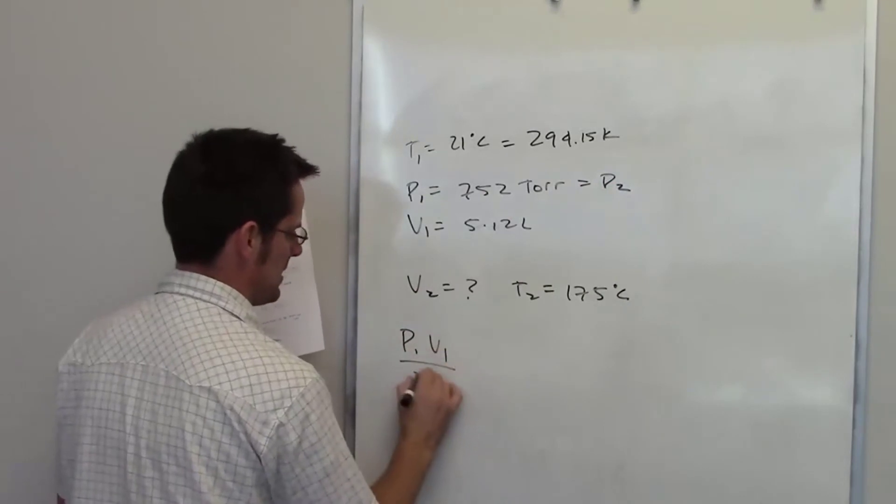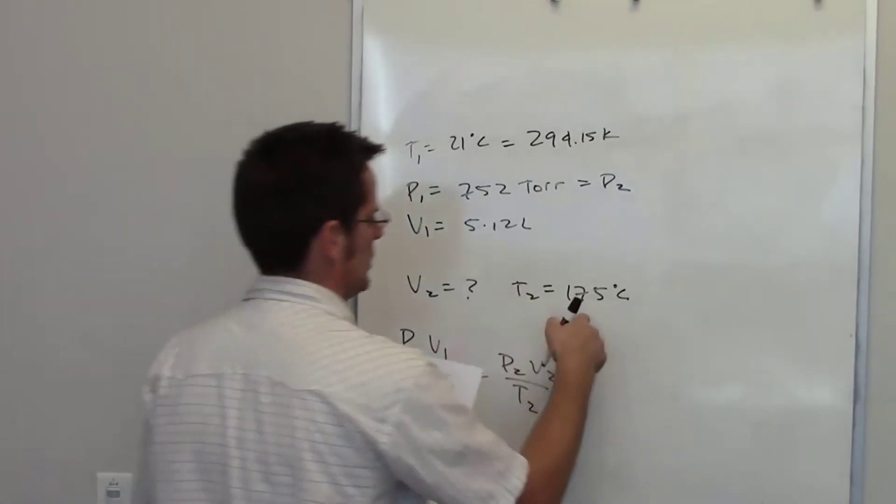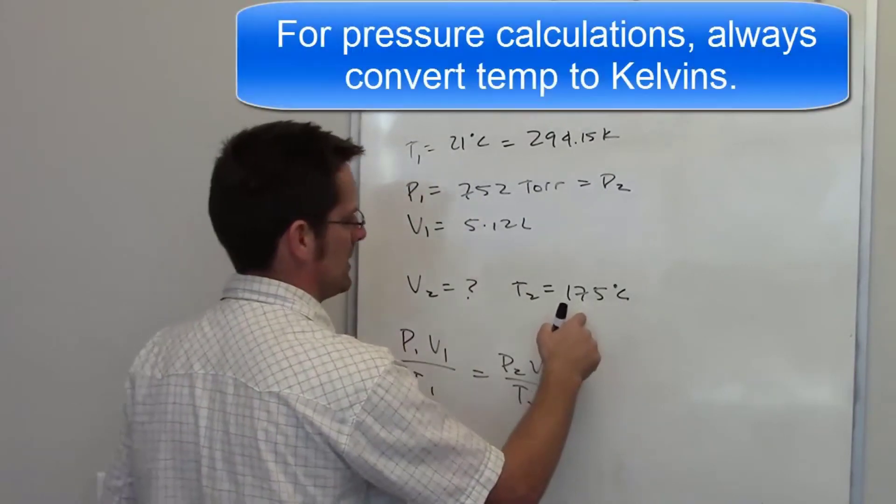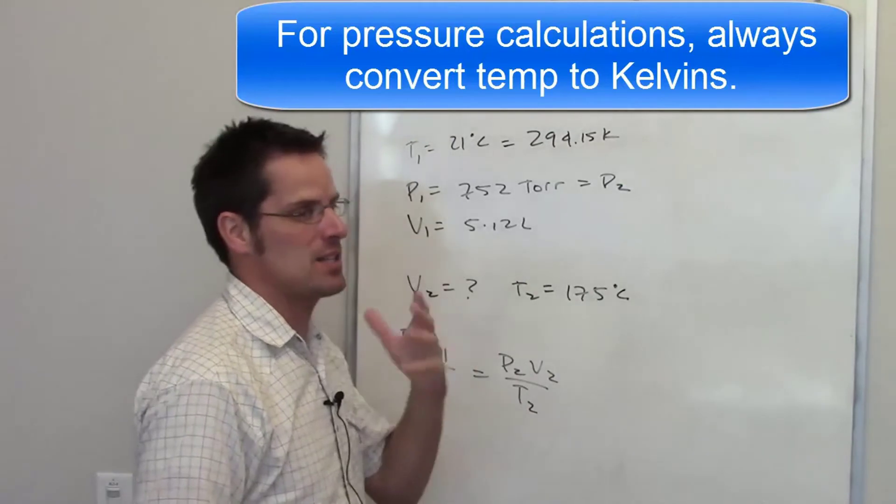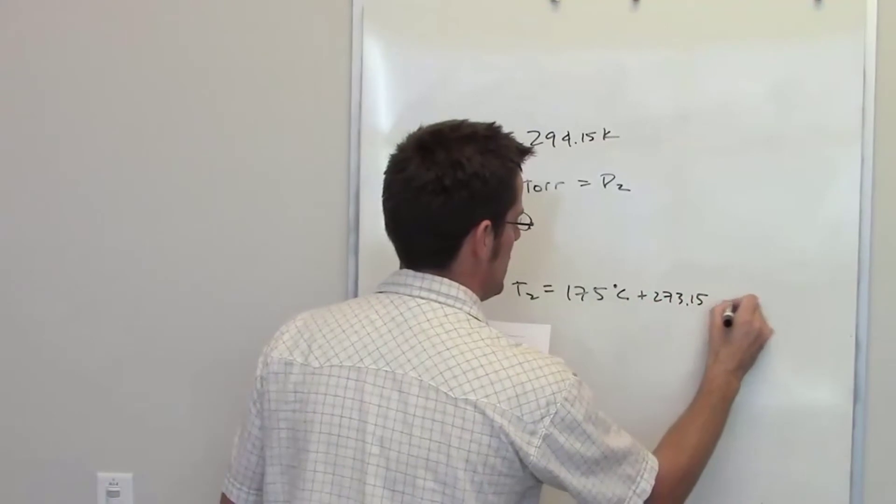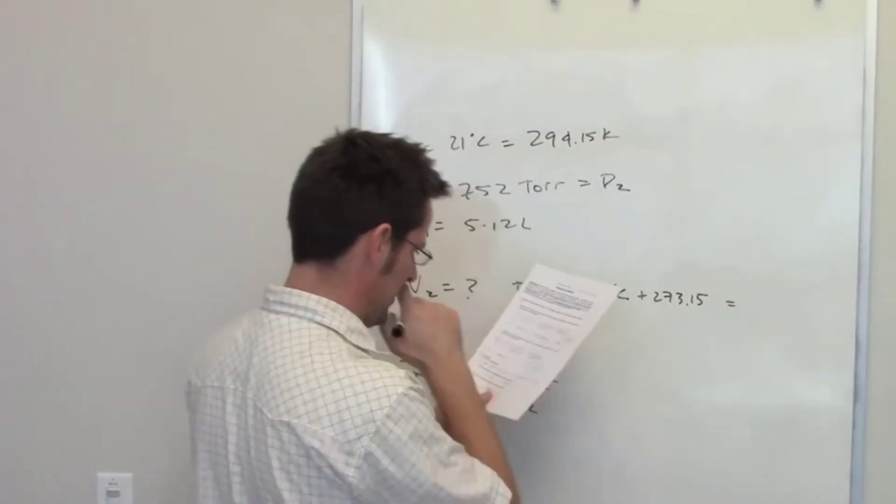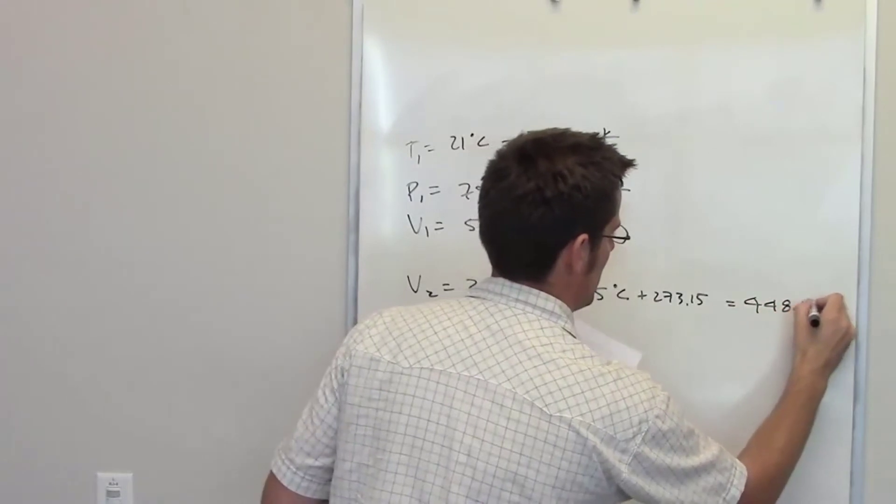I'm once again going to use the combined gas law, and I want to make sure that all of my units match. I always convert to Kelvins for any of the things from chapter 10. Anytime I'm doing a gas calculation, I always convert to Kelvin. So I take 175, I add 273.15, and that gives me the total number of Kelvins as being 448.15 Kelvins.